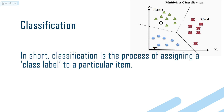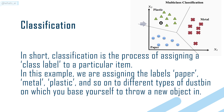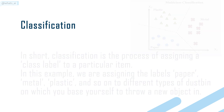In short, classification is the process of assigning a class label to a particular item. In this example, we are assigning the labels paper, metal, plastic, and so on to different types of dust bin, on which you base yourself to throw a new object in.